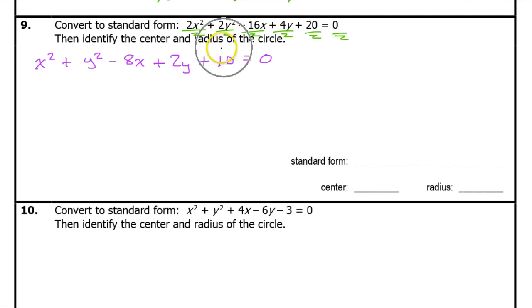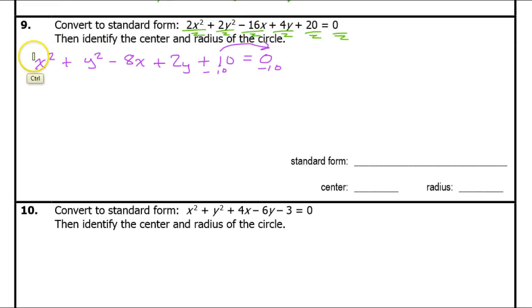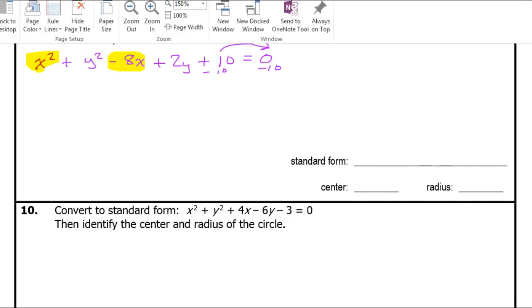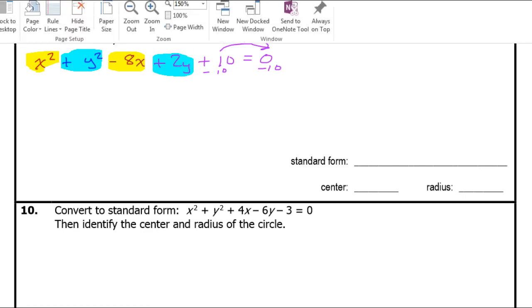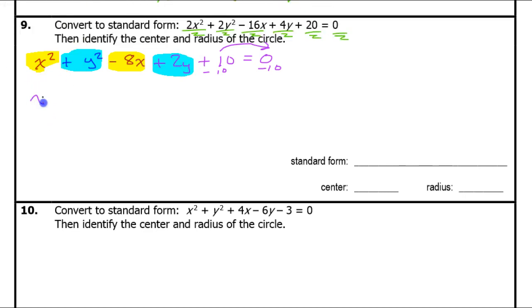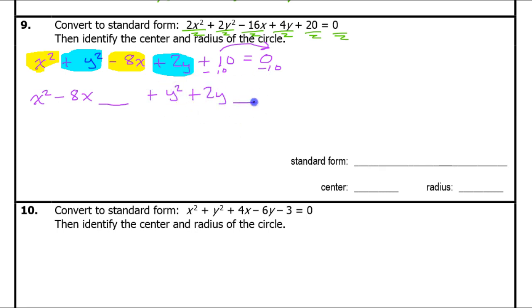This 10 needs to go to the other side, so subtract 10 from both sides, giving negative 10 on the right. Then rearrange so the x terms are side by side and the y terms are side by side: x squared minus 8x [space] plus y squared plus 2y [space] equals negative 10.